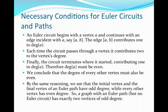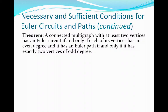This can be summed up by the following theorem: A connected multigraph with at least two vertices has an Euler circuit if and only if each of its vertices has even degree, and it has an Euler path if and only if it has exactly two vertices of odd degree. Let's consider the following graph, which models the problem we discussed when we first introduced the notion of Euler circuit and Euler path.